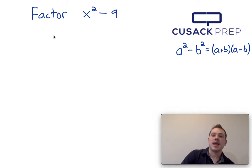Now, if a squared is x squared, then that means a must be x, and if b squared is 9, so I have 9 here, b squared here, that means b must be 3.